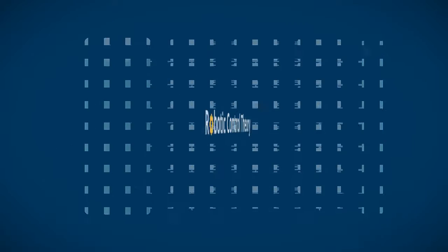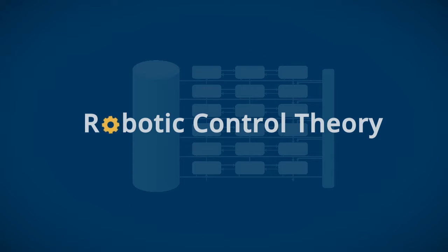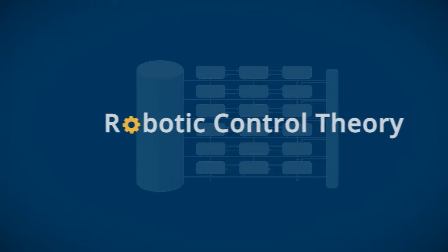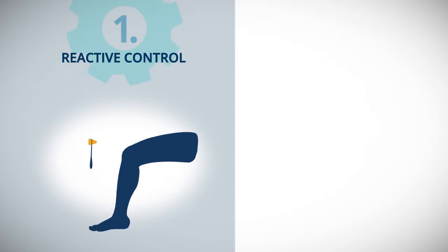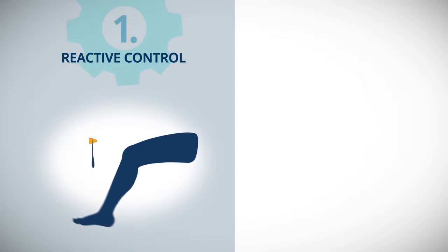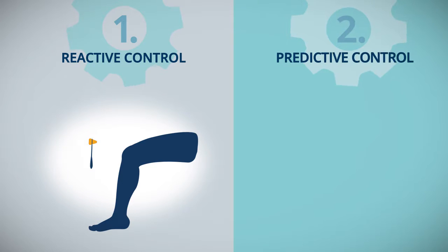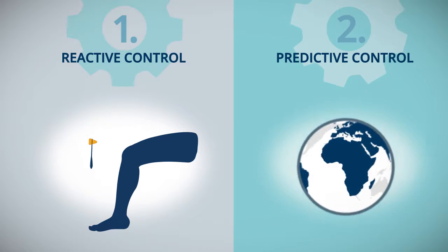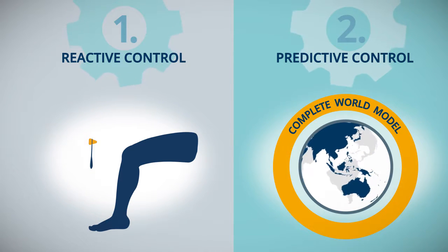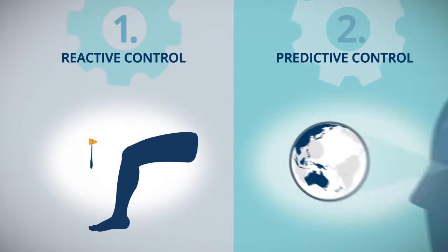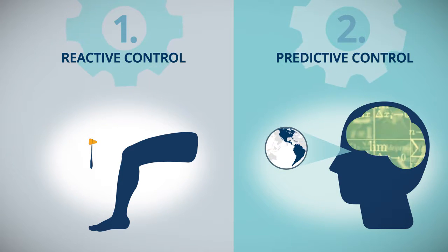A useful parallel is found in robotics control theory, which defines two types of control. Reactive: fast response that is based on very limited data input and isn't very smart. And predictive, which is based on a much more complete world model that includes all the parameters required and a high level of intelligence to plan out the best solution in advance.